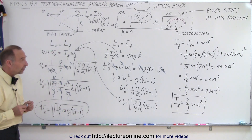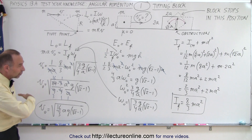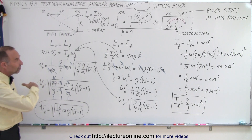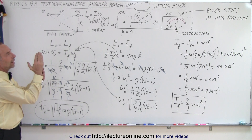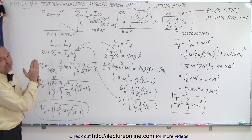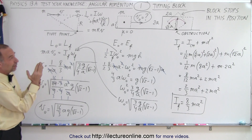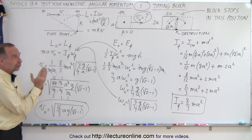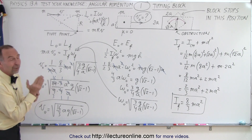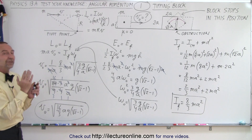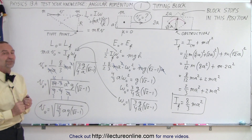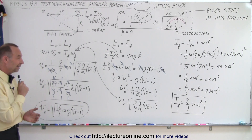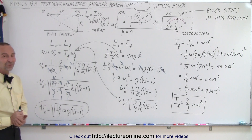That is the initial velocity of the block. If it has that velocity, it will hit the obstruction, tip, and stop at the maximum height balanced on its corner. At that point it will either fall back down, fall to the right, or if everything is perfect, remain in that position. And that is how it's done.